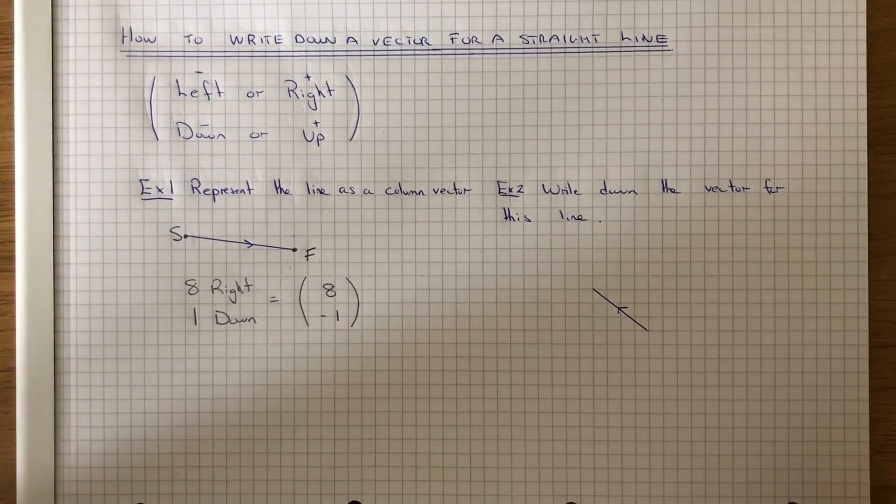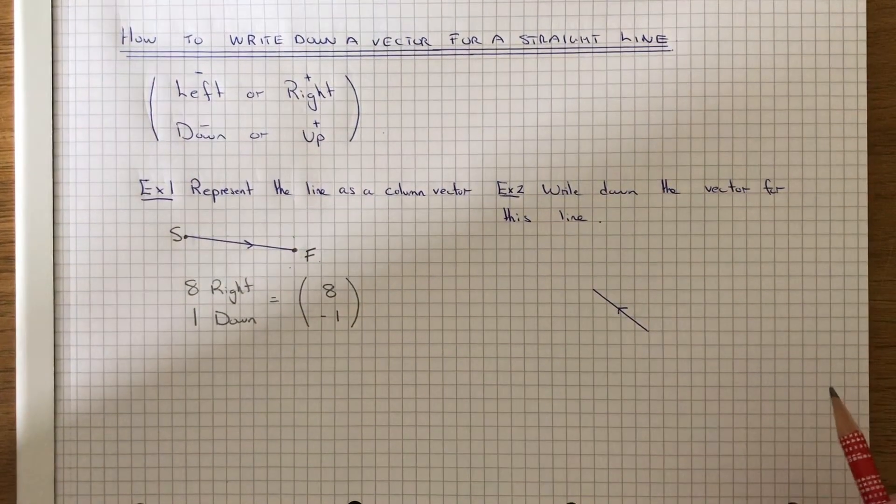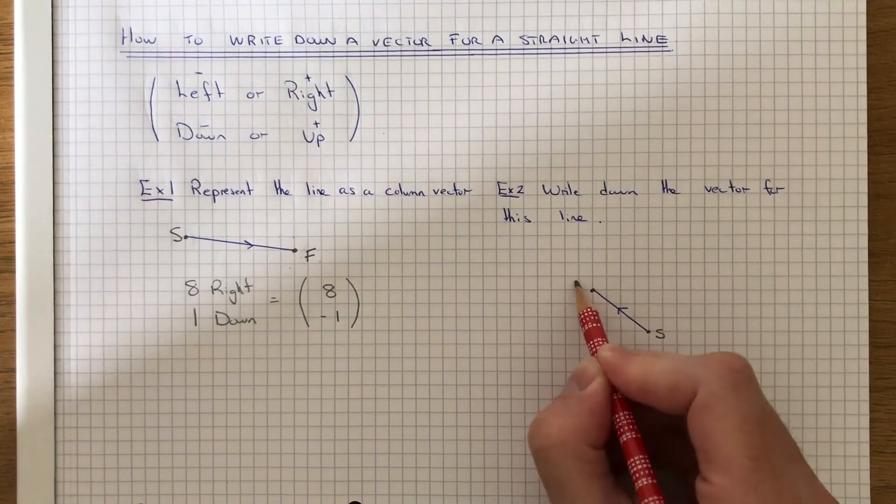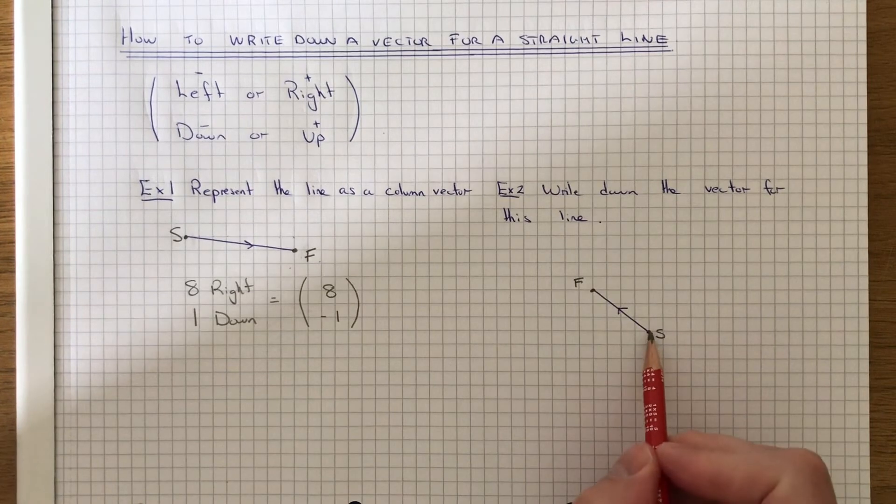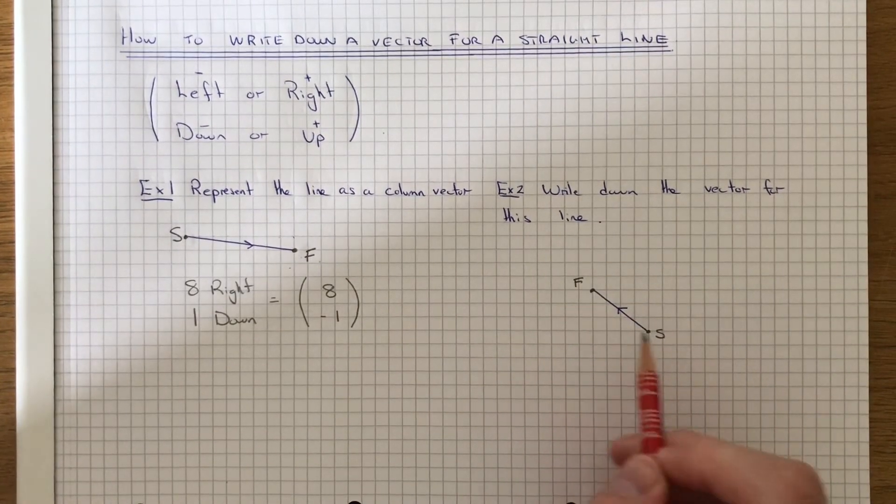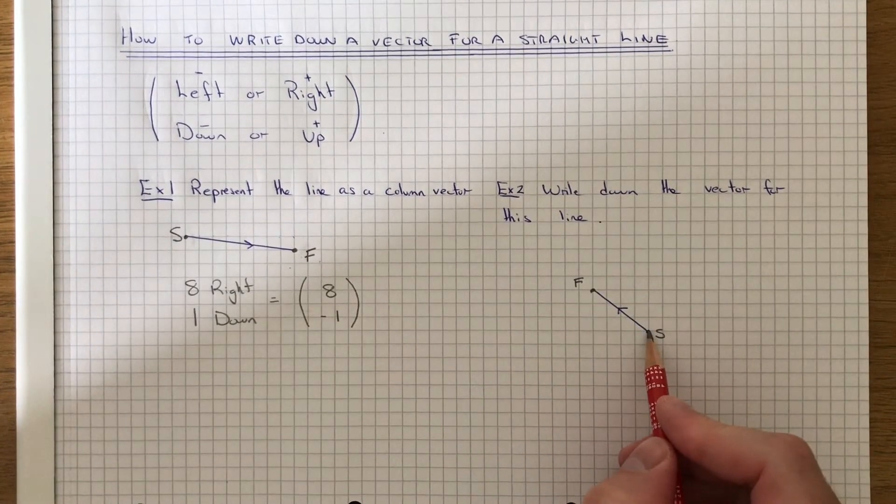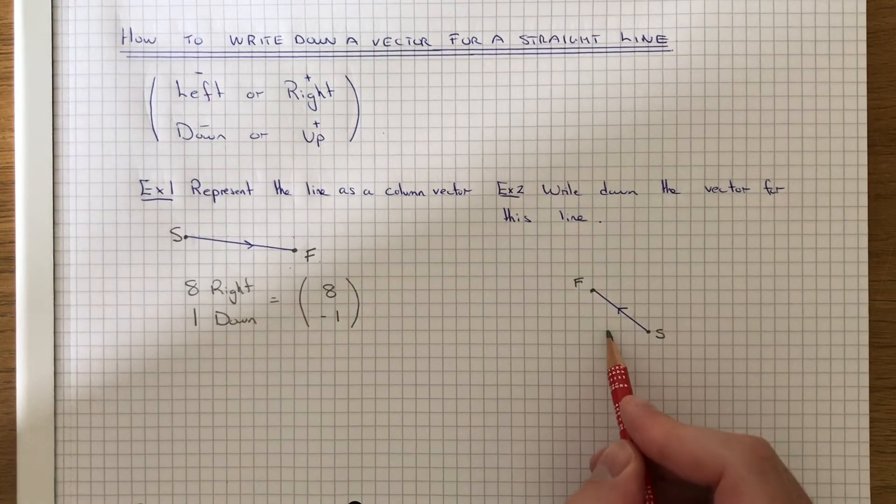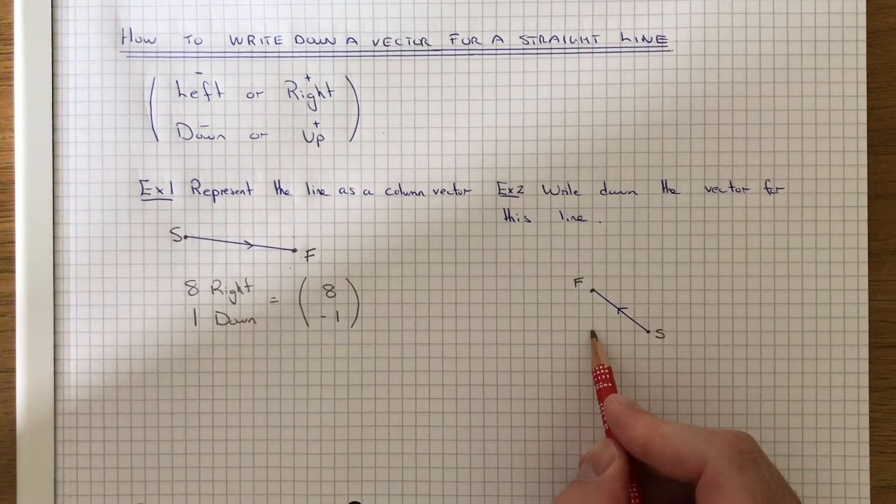So let's move on to example two then. So again, first look at where the line starts and where it finishes. So how do we get from here to here? So let's go across first of all. It will be 1, 2, 3, 4. 4 squares to the left.